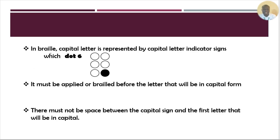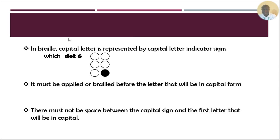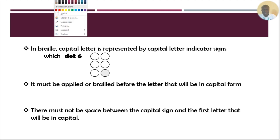What is the indicator for the capital sign in Braille? The capital letter is represented by the capital letter indicator sign, and it is represented by dot 6. Capital letter is represented by dot 6.